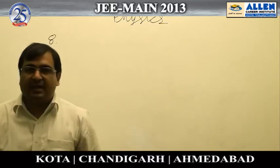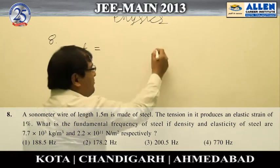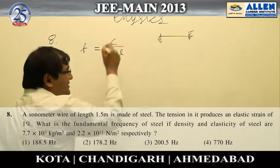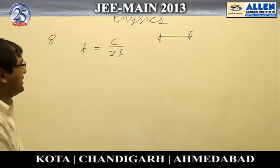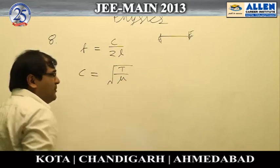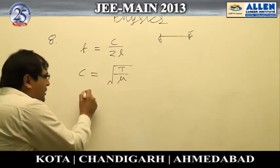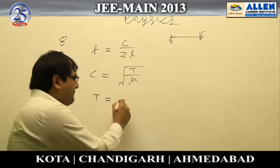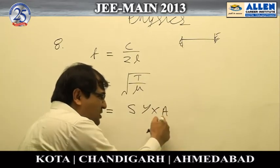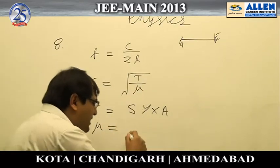Question number eight asks about the fundamental frequency of a sonometer steel wire. The fundamental frequency of a wire tied at both ends is f = v/2L, where v is the velocity of the wave in the wire. The velocity is given by √(T/μ), where T is the tension and μ is the mass per unit length. To find tension, we use strain × Young's modulus to get stress, then multiply by the cross-sectional area. Mass per unit length is found using the given density multiplied by the cross-sectional area.